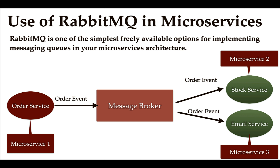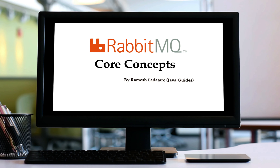RabbitMQ is one of the simplest, freely available options for implementing messaging queues in a microservices architecture. For example, an architecture with order service, stock service, and email service can have these microservices communicate using a message broker — which can be RabbitMQ, Apache Kafka, or any other message queue. In this course we'll learn how to use RabbitMQ as a message broker for asynchronous communication between microservices.